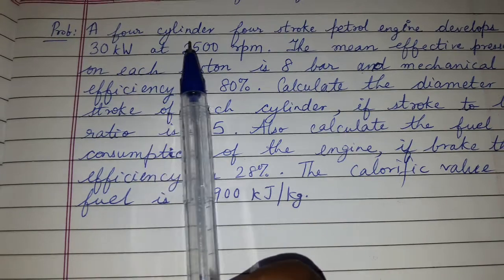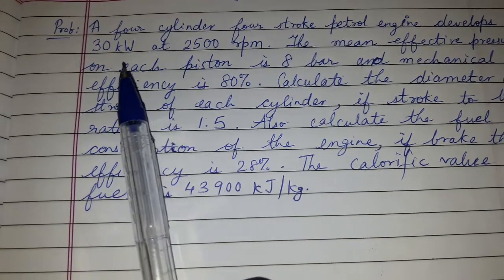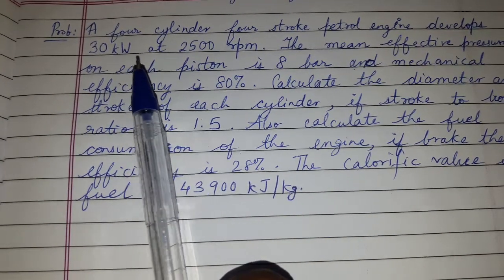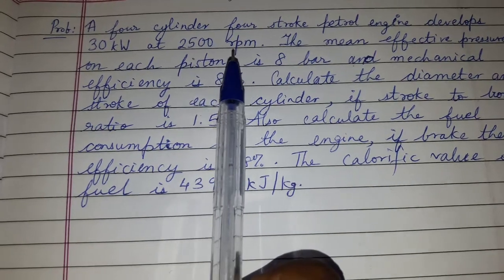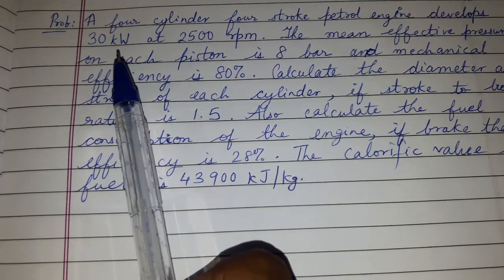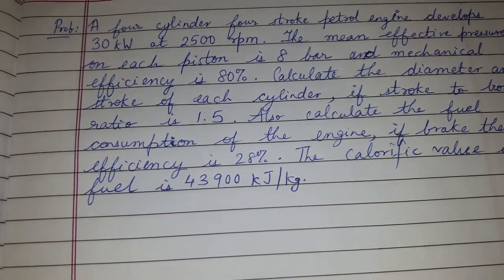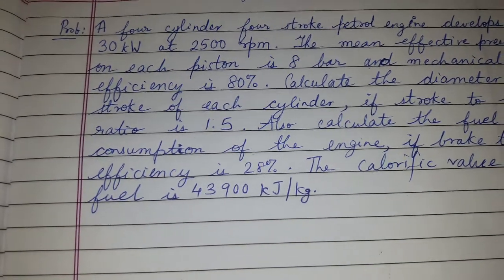Four cylinders means K equals four, and 30 kilowatts at 2500 rpm. Here brake power is given at capital N as 2500.